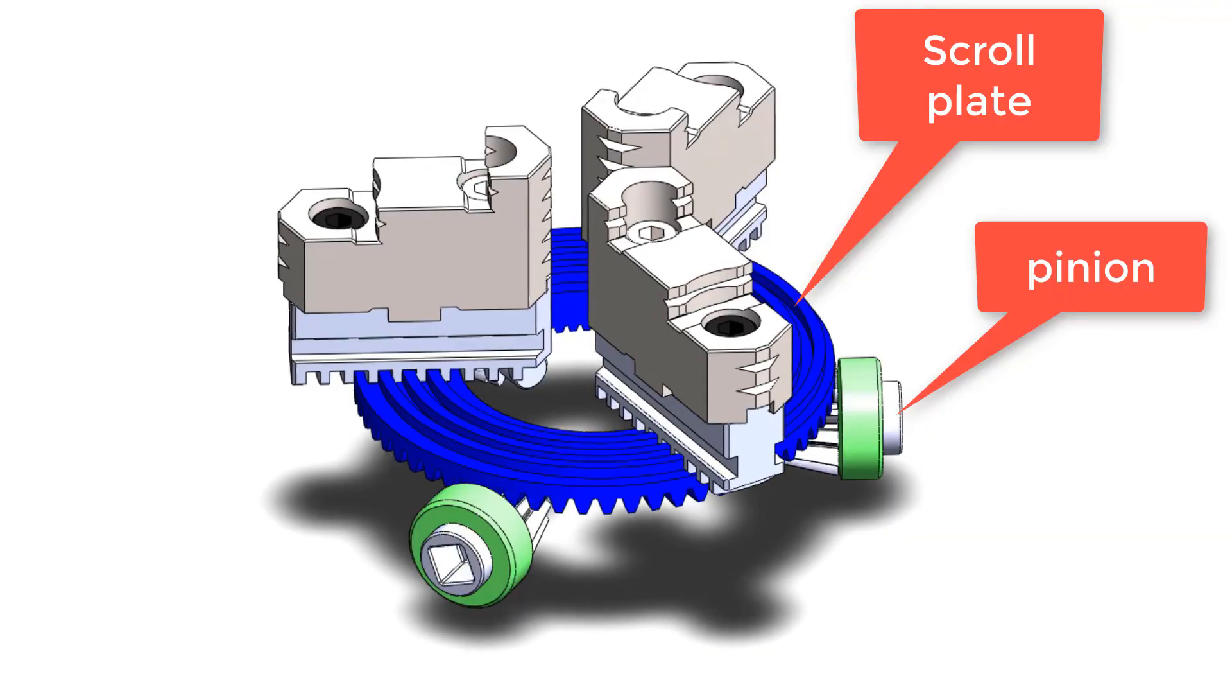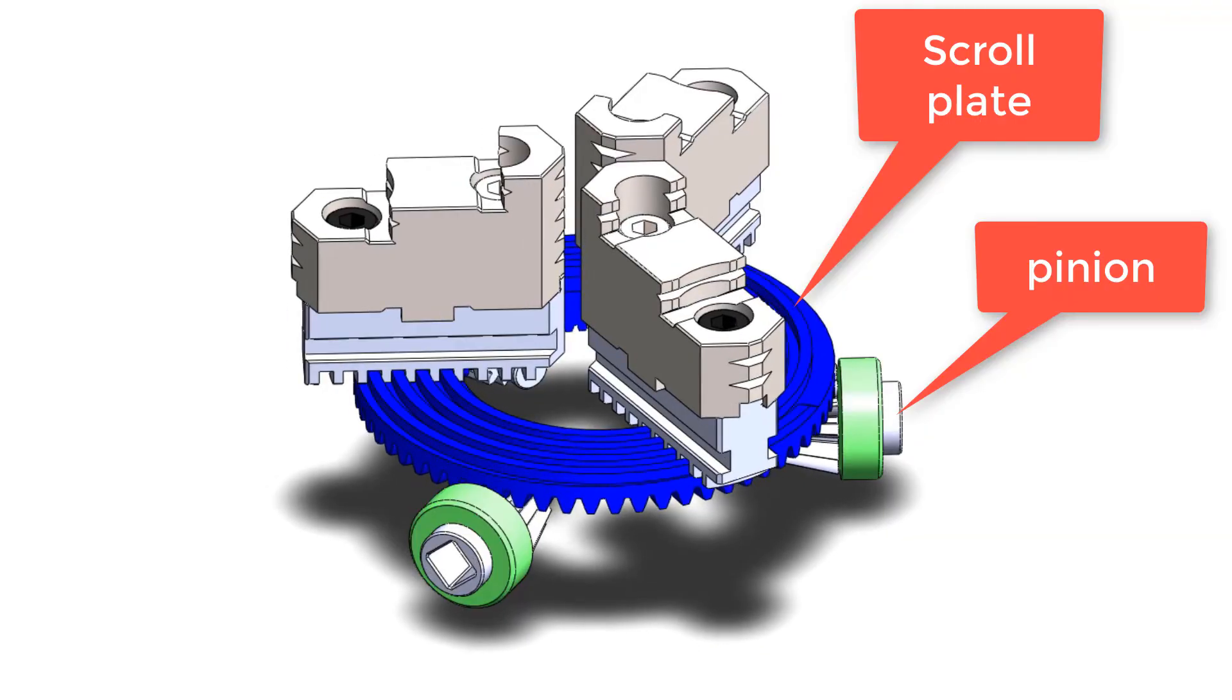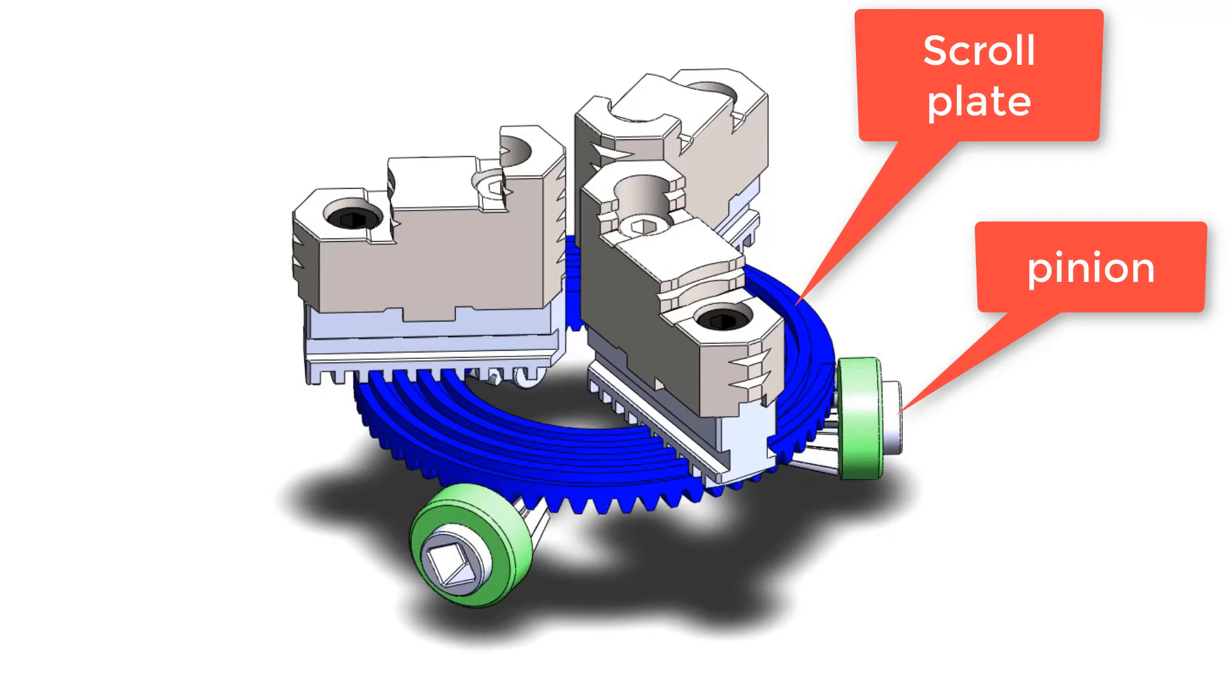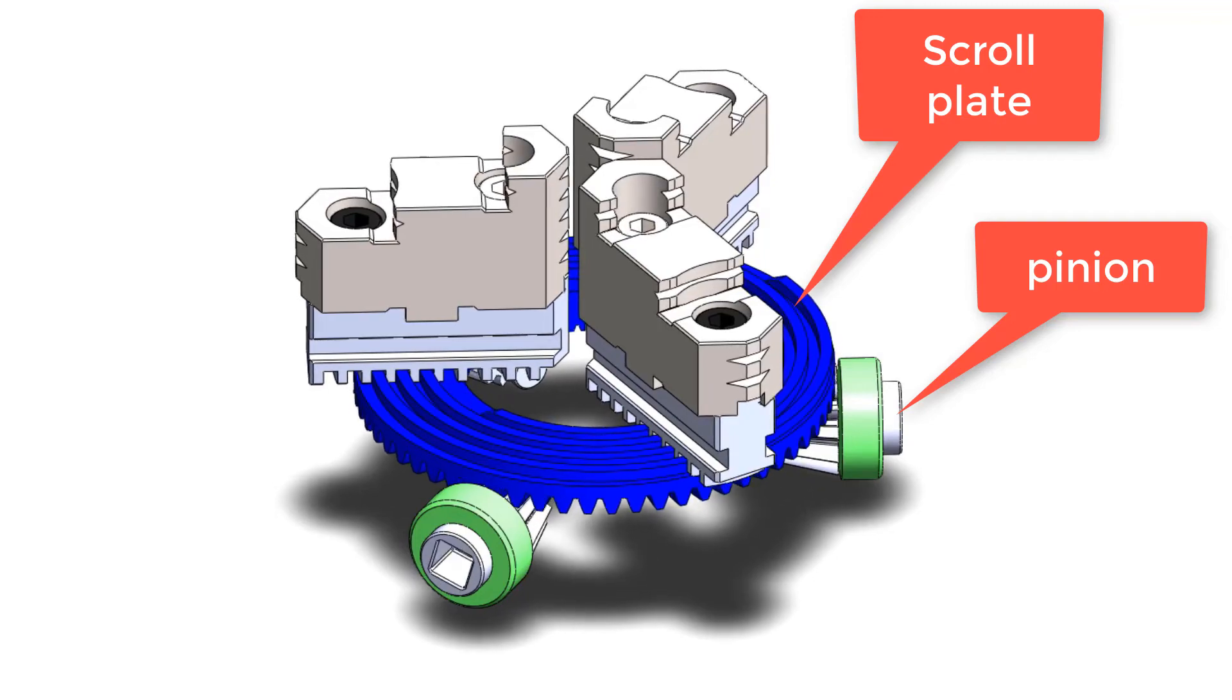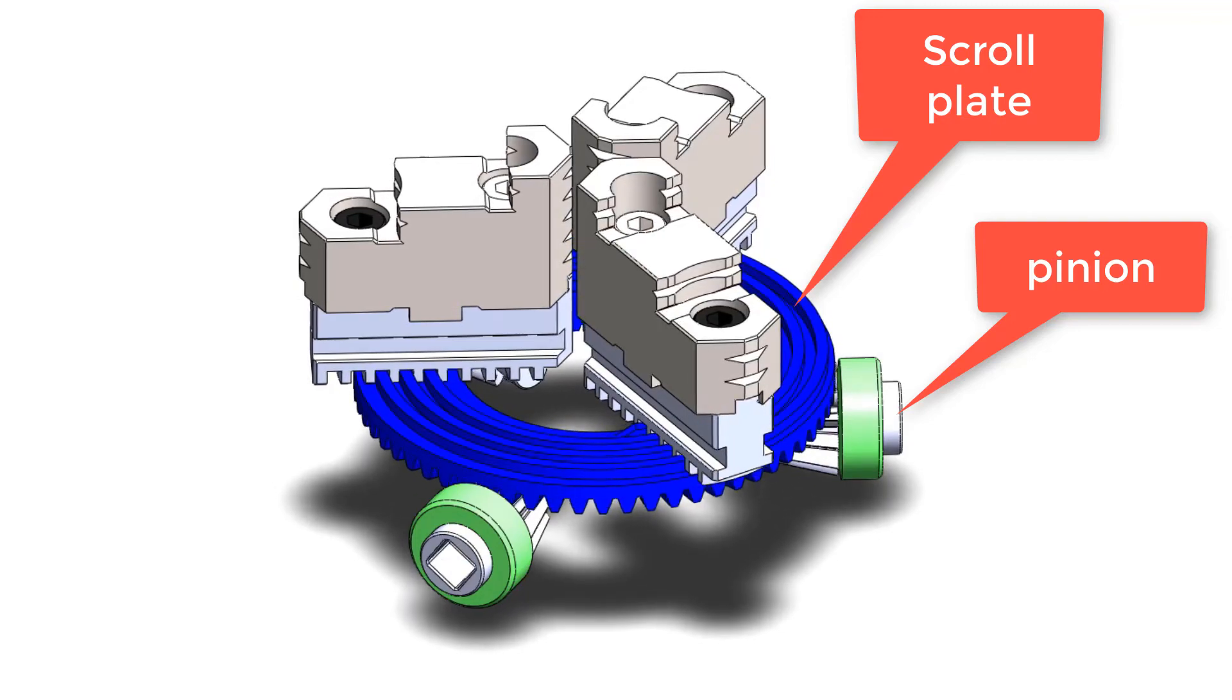The distance traveled by the jaw depends upon the spiral pitch. In this case it is 6mm, which means when the spiral plate moves 360 degrees it can move the jaw 6mm.